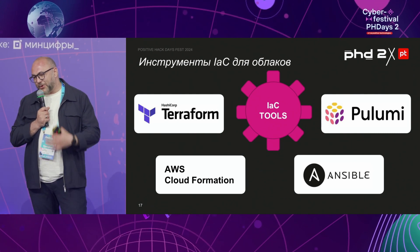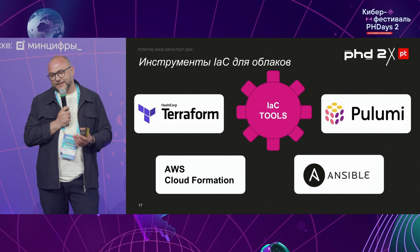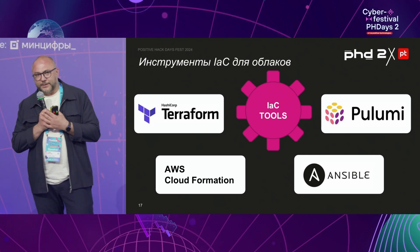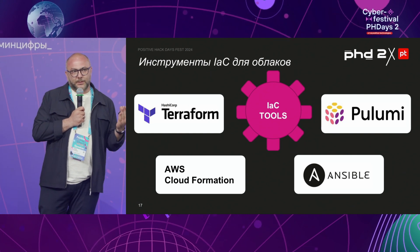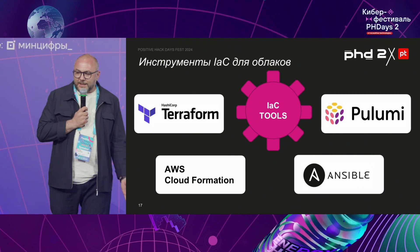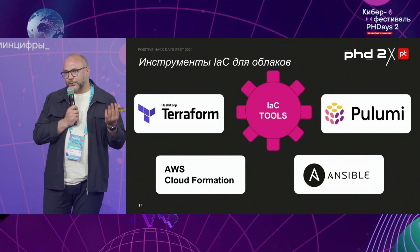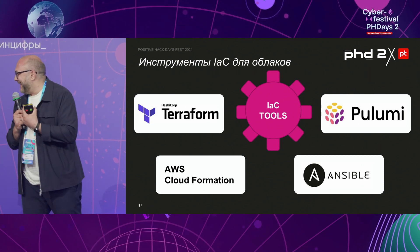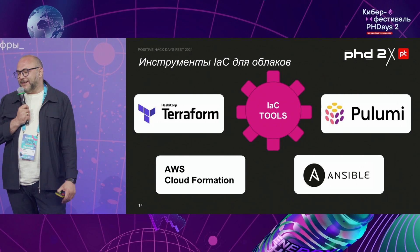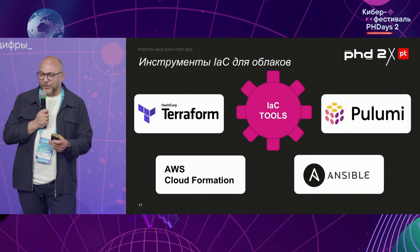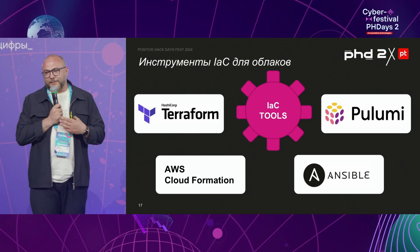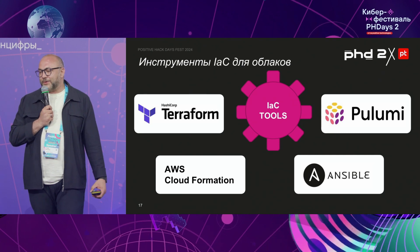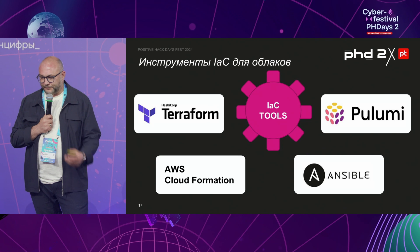Terraform is based on its own language, HCL. It allows describing the infrastructure you want to create. Cloud platforms like AWS come up with their own utilities such as CloudFormation — it's a good tool, but it only covers one cloud platform. Ansible allows you to control infrastructure using plugins. There is also a tool called Pulumi, which is becoming more and more popular — you can use JavaScript, Python, or any other language to code the infrastructure you want to deploy.